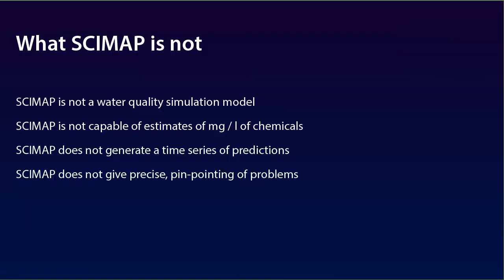It is worth noting what CIMAP is not. The key point is that CIMAP is not a full physics water quality simulation model. Therefore, it is not able to give estimates of milligrams per litre of chemicals within the water, and it is also not able to generate a time series of predictions. CIMAP will only give information on the patterns in space and not in time. The outputs from CIMAP are always relative — it identifies the probable better and worse areas within the catchment, and does not aim to quantify the actual load.